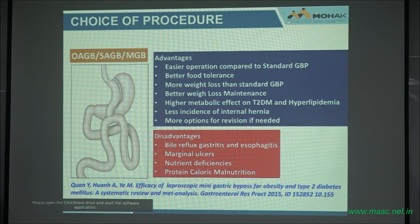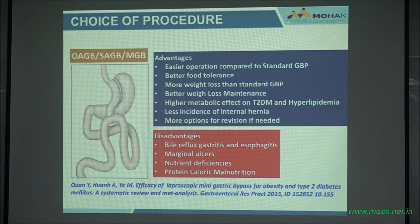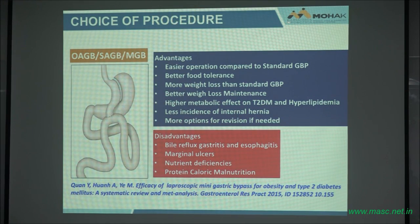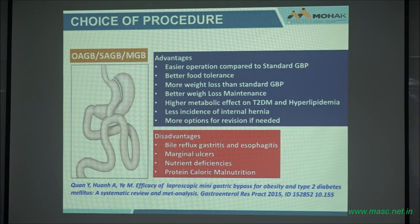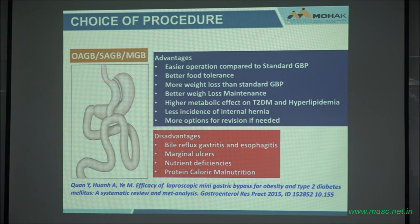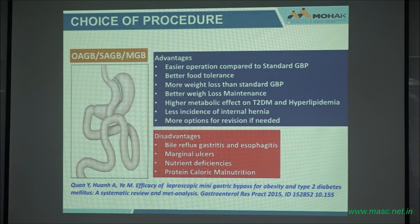Normal albumin levels should be 3.5. Most doctors who do this procedure say no, because they have not looked at it — we have looked at it. So what did we do? We changed our biliopancreatic limb length from 250 centimeters to a standard 180 centimeters. If you do not look and study, you don't know. If you look and study, then you know what to modify.